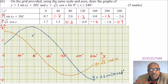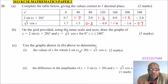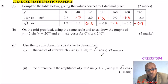With the graphs drawn, we can answer the next question. Use the graphs drawn in part b to determine the values of x for which 2 sin(x + 20°) = √3 cos x. You get 2 marks.